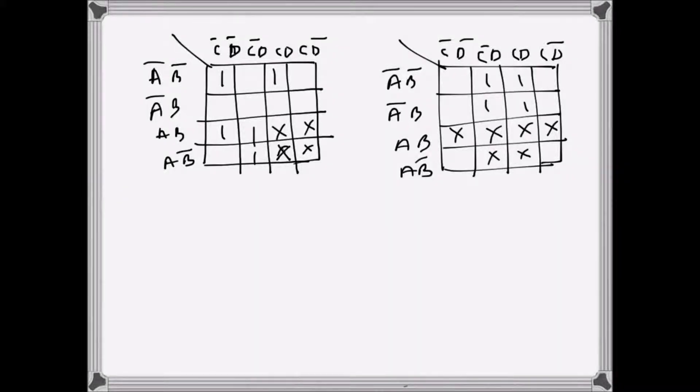There's two K-maps with don't care conditions, so let us look at this one first. The left one, I will use different colors. The don't cares are given as the cross sign.